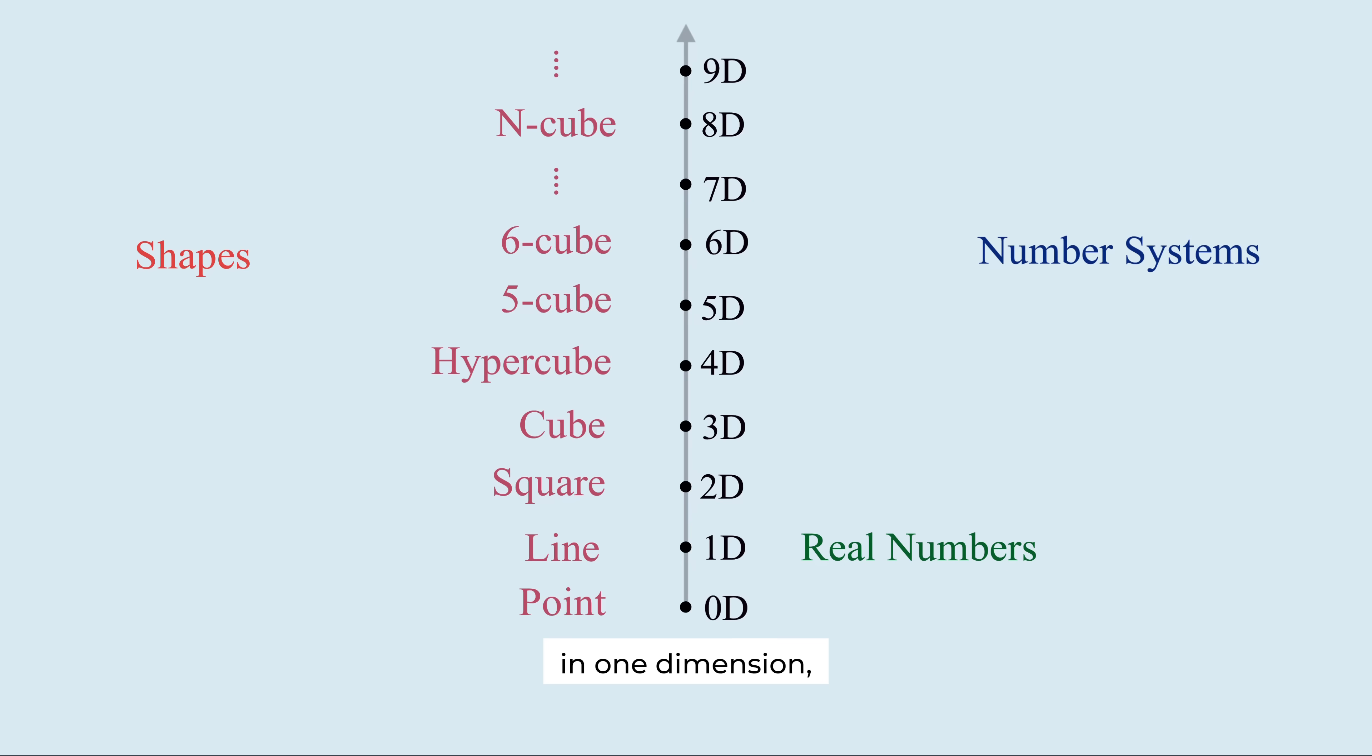Number systems evolve with dimension. Real numbers live in one dimension, complex numbers in 2, quaternions in 4, octonions in 8.